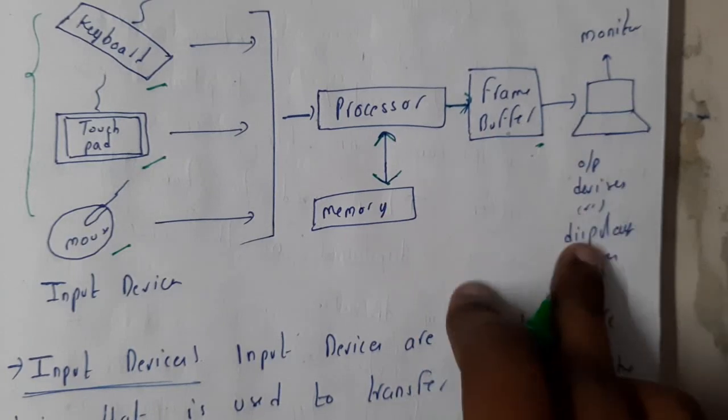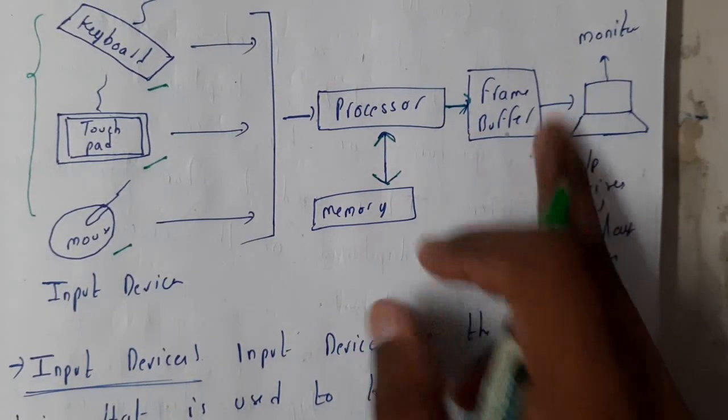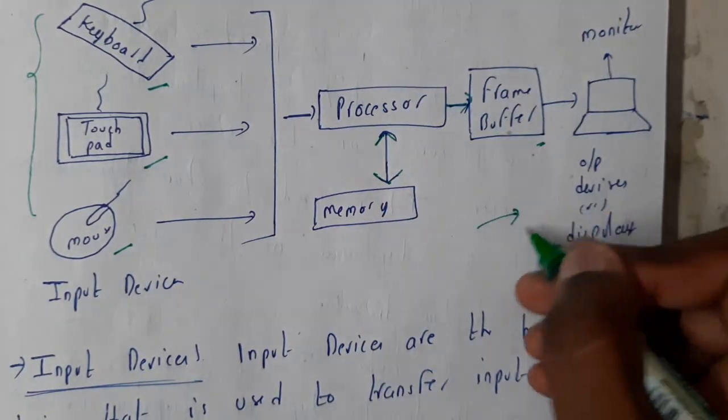It is finally displayed onto the output device. Output device mostly will be the monitor, guys, but the way of displaying will be different. We are having three different types: cathode ray tube, raster scan, or random scan. We'll be discussing about those.